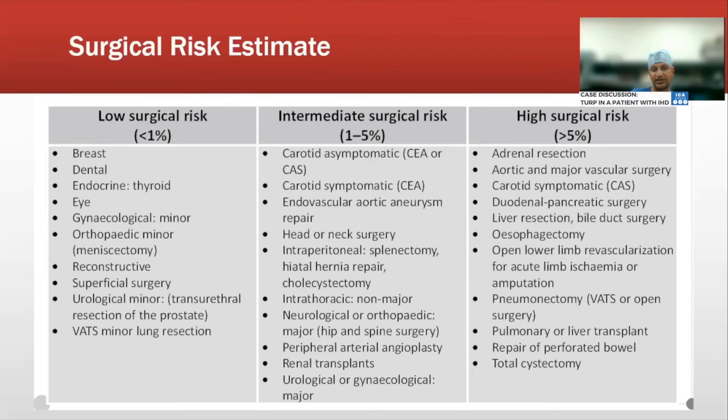High-risk surgeries include adrenal resection, aortic and major vascular surgery, carotid symptomatic procedures, duodenal pancreatic surgery, liver resection, esophagectomy, open lower limb revascularization for acute limb ischemia or amputation, pneumonectomy whether VATS or open, pulmonary or liver transplant, and repair of perforated bowel.